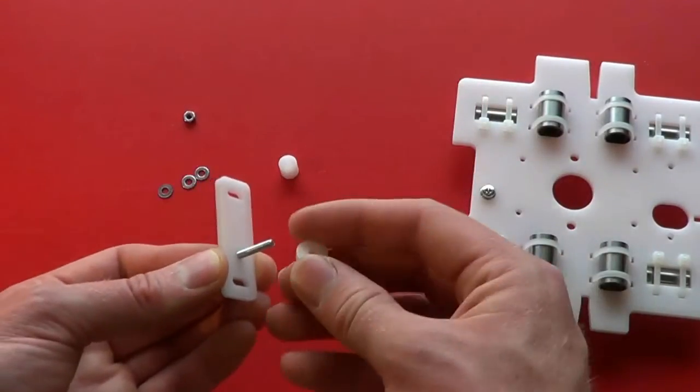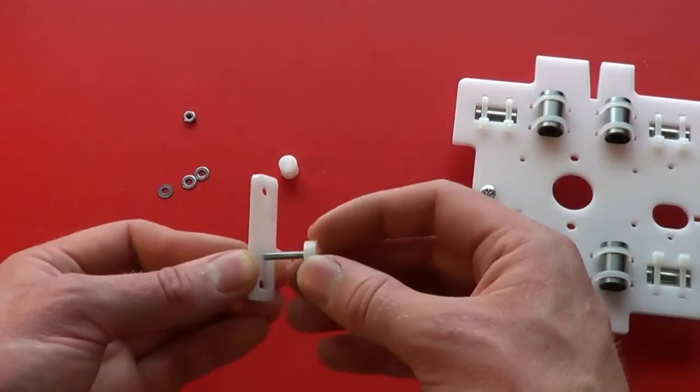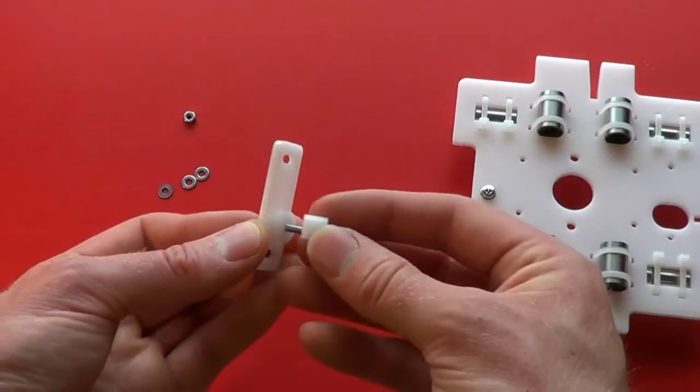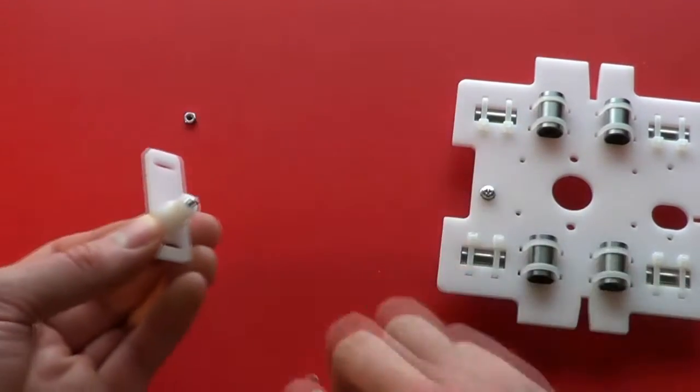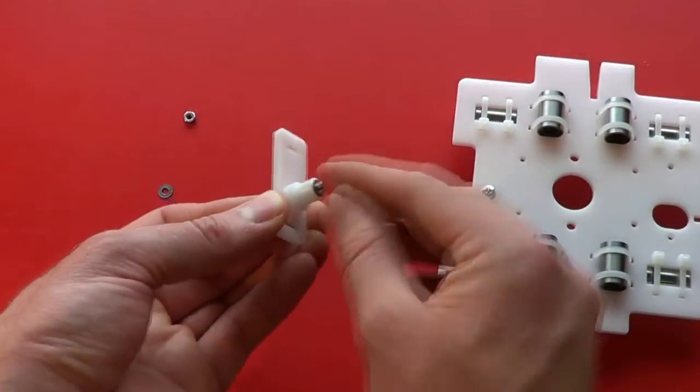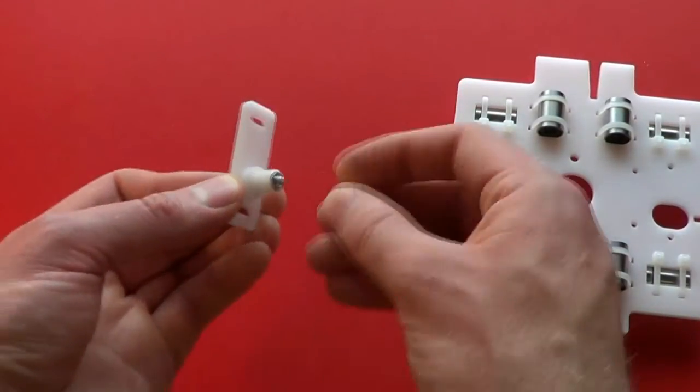Then we need to put the spacer on, that's the large disc spacer. Then the anchor post. Another washer. And a nut.